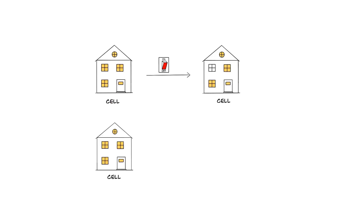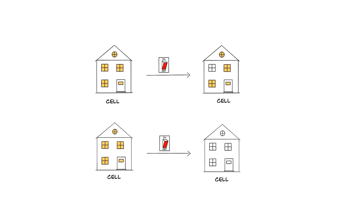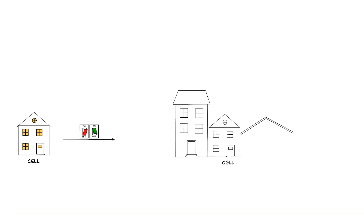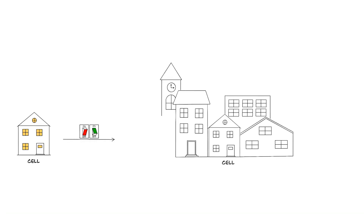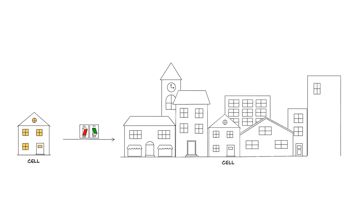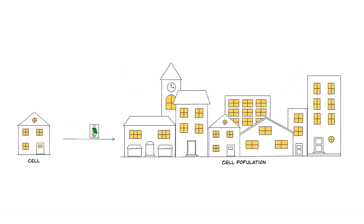Other faulty epigenetic switches can cause rewiring of the entire cell identity, like the impact of turning off the lights in a whole house. A blackout in a whole city has a major impact and such epigenetic aberrations cause changes in populations of cells.